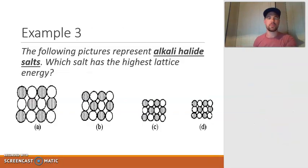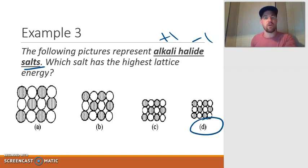Let's finish with example 3. The following picture represents alkali halide salts. Alkali means all the cations are alkali metals or positive 1. Halide means all anions are negative 1. Which salt would have the highest lattice energy? Since we know every ion has the same charge, we have to go based on size. Looking at the size, letter D has the smallest ions out of all four options. Therefore, letter D will have the highest lattice energy. That's it for section two. We'll see you in the next video in section three.